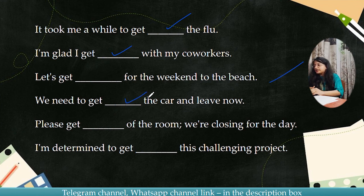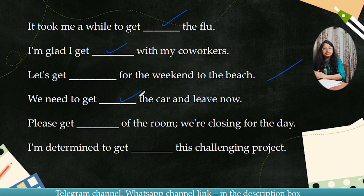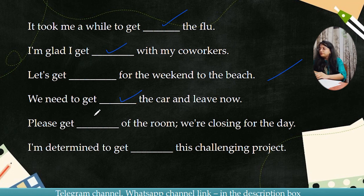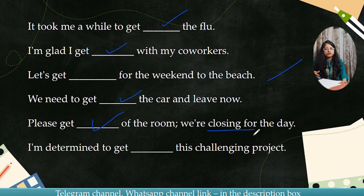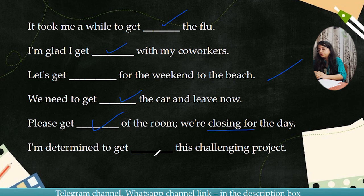We need to get [blank] the car and leave now. We need to get inside the car, so the answer is: we need to get in the car and leave. Next: Please get [blank] of the room, we are closing for the day. The hint is 'closing' — so naturally the answer is get out.